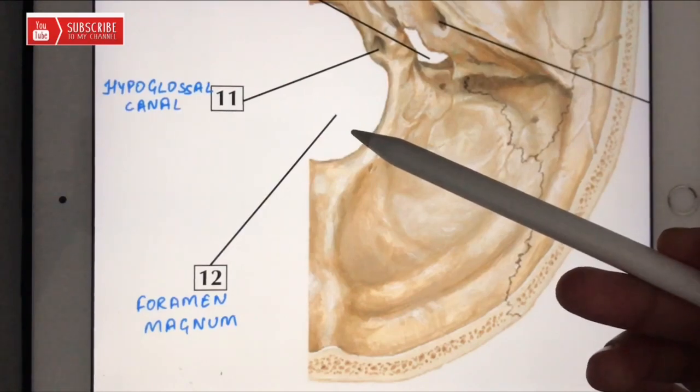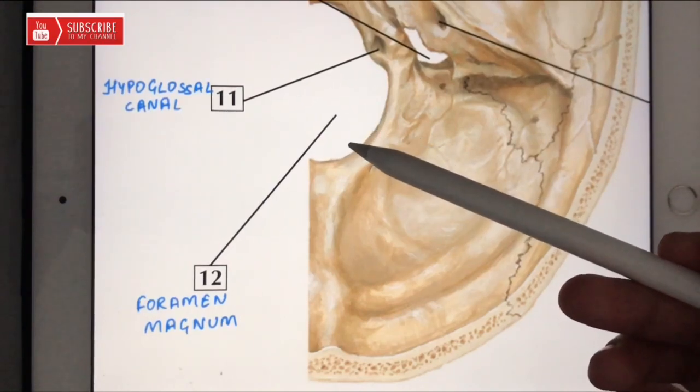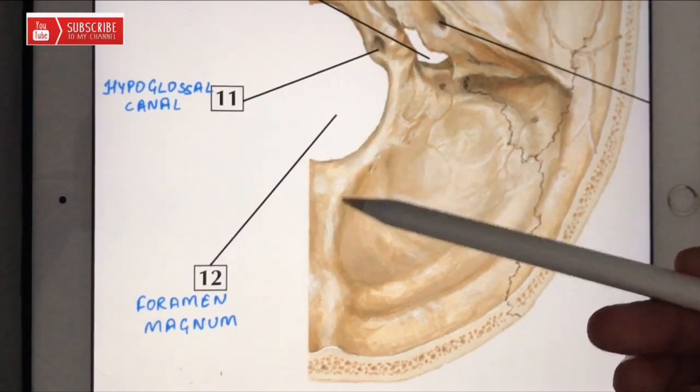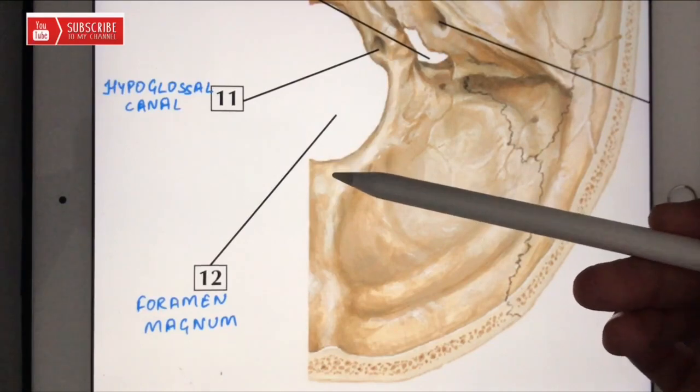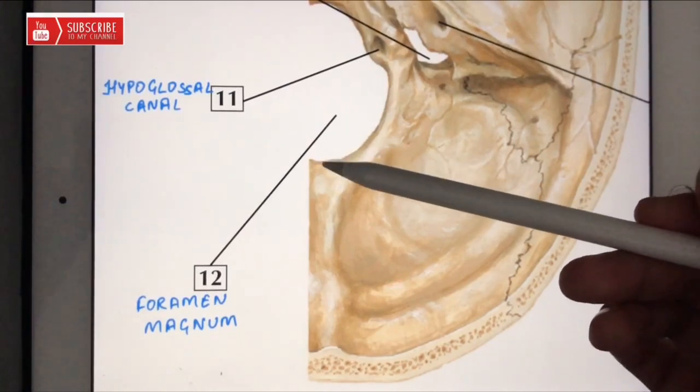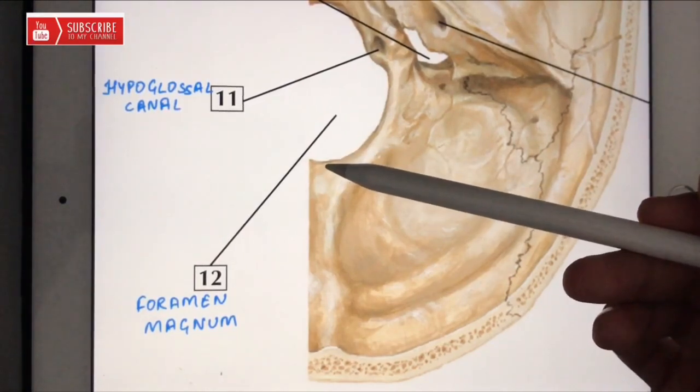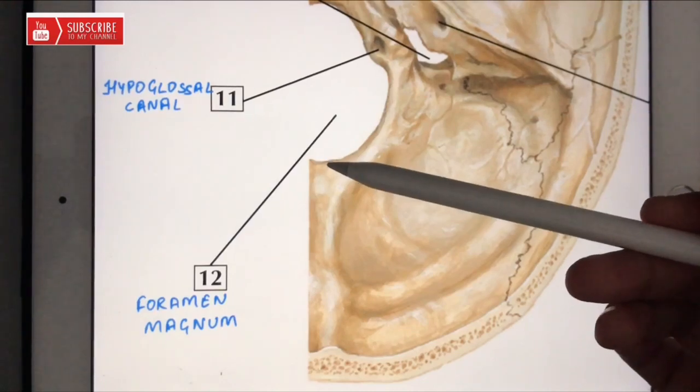Apart from the transmission of the medulla oblongata and its membranes, foramen magnum also transmits the vertebral arteries, anterior and posterior spinal arteries, the tectorial membrane, as well as the alar ligament.